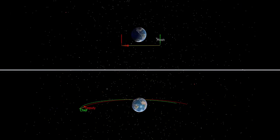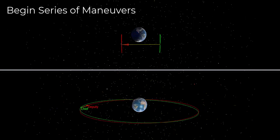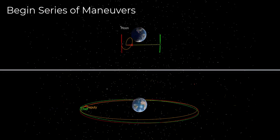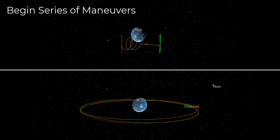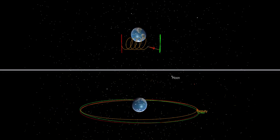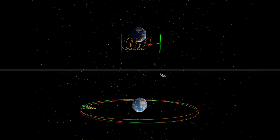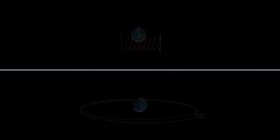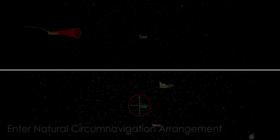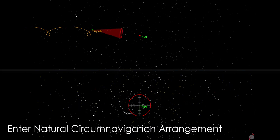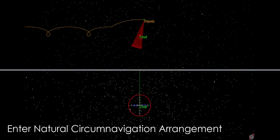The U.S. continuously tracks the movements of the Russian spacecraft using ground-based and space-based situational awareness capabilities. In a recent development, the U.S. satellite strategically jumped to a higher orbit, evading a close approach by Cosmos 2542. This maneuver showcased the ability to adjust orbits to maintain space superiority.